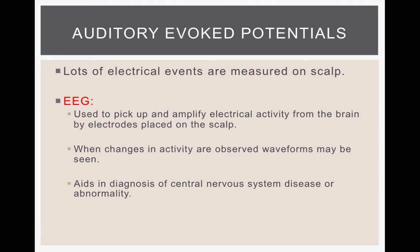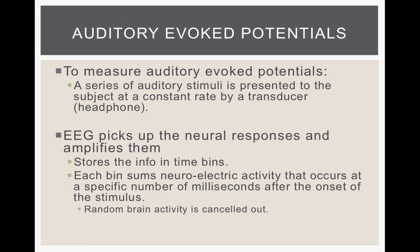There are lots of electrical events happening on the scalp, but we use EEG to pick up and amplify the electrical response to sound and to remove the noise. EEG picks up and amplifies electrical activity from the brain through electrodes placed on the scalp. When changes in activity are observed in the waveforms, this helps in the diagnosis of central nervous system diseases or abnormalities. The surface electrodes do not hurt — you just place them on the scalp and don't feel anything. A large number of averages are taken to cancel out the background brain activity and isolate the auditory response.